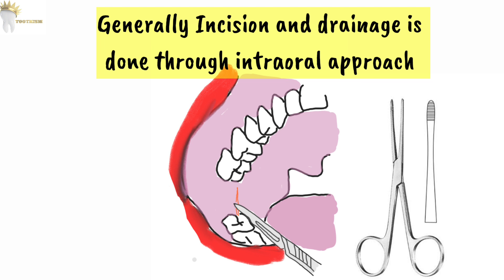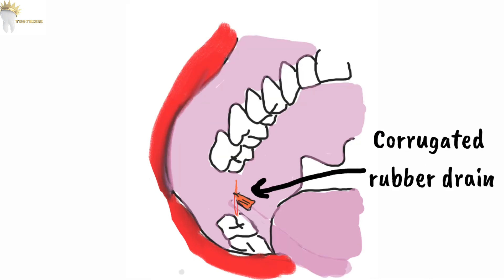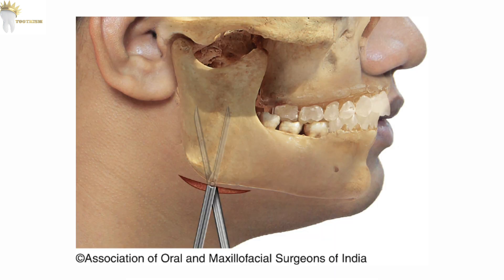A corrugated rubber drain is inserted and sutured to the margins of the incision. In the extraoral approach, an incision of 1.5 cm is made on the skin at the angle region. Sinus forceps is inserted towards the medial aspect of the mandible directing superiorly, close to the bone. Pus is evacuated and a rubber drain is inserted and sutured to the margins of the incision.